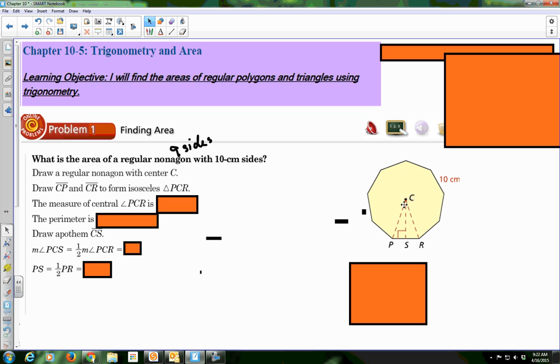The next thing that you do is to draw your nonagon radiuses from the center to the vertex. We're going to go CP and CR. And you get a nice little isosceles triangle right here. The measure of our central angle, which is this entire angle here, is 360 divided by 9. When you simplify that out, you get 40.